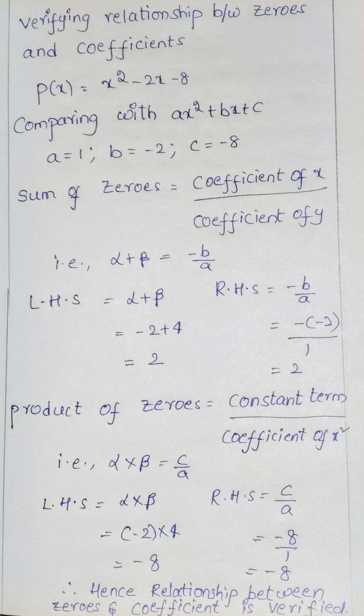Now we have to verify the zeros and the coefficients. P of x equals x squared minus 2x minus 8. Comparing with ax squared plus bx plus c, we get a equals 1, b equals minus 2, and c equals minus 8. The sum of the zeros equals the coefficient of x divided by the coefficient of x squared, and the product of zeros equals the constant term divided by the coefficient of x squared.